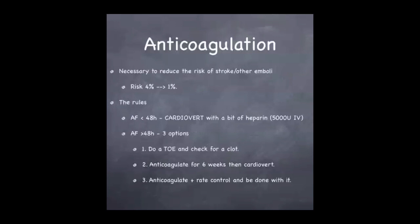Anticoagulation is very important when considering the risk of stroke due to emboli. Using anticoagulants reduces the risk from 4% to 1% per year. If the AF has a definable onset and has been going on for less than 48 hours, it's safe to cardiovert without fully anticoagulating, though you would give a bit of heparin — say 5,000 units IV. If the AF has been going on for greater than 48 hours, you have a couple of options: do a transoesophageal echo to check for a clot, anticoagulate for six weeks then cardiovert, or anticoagulate and rate control — which is often what happens in practice, particularly in elderly patients.